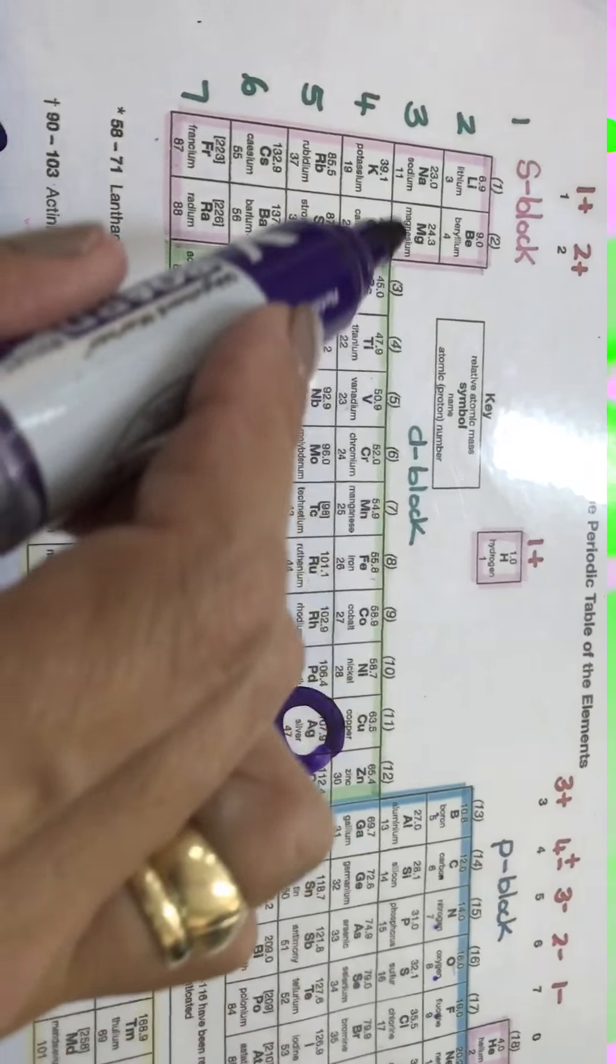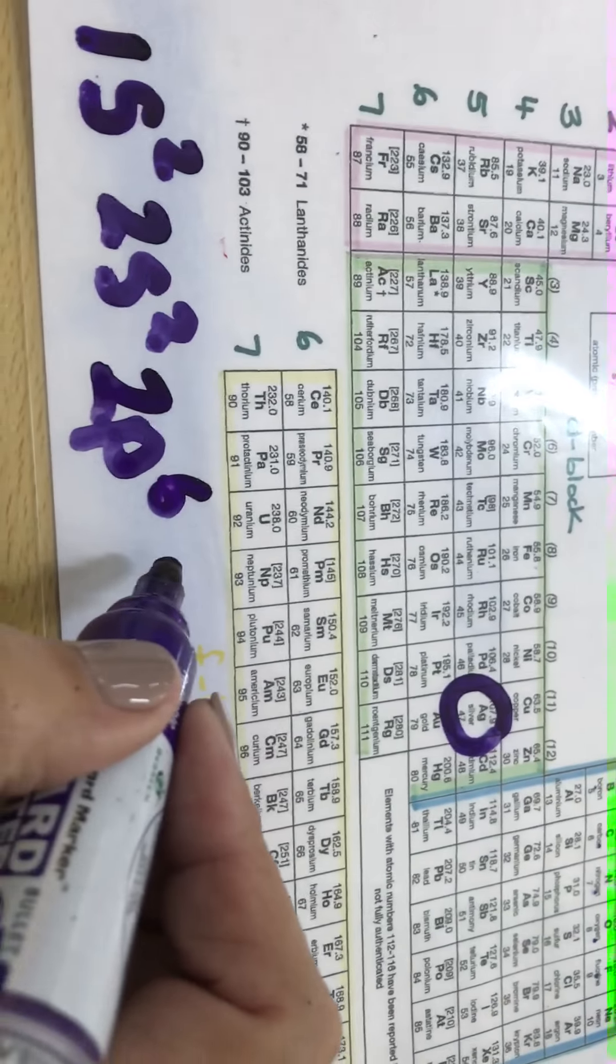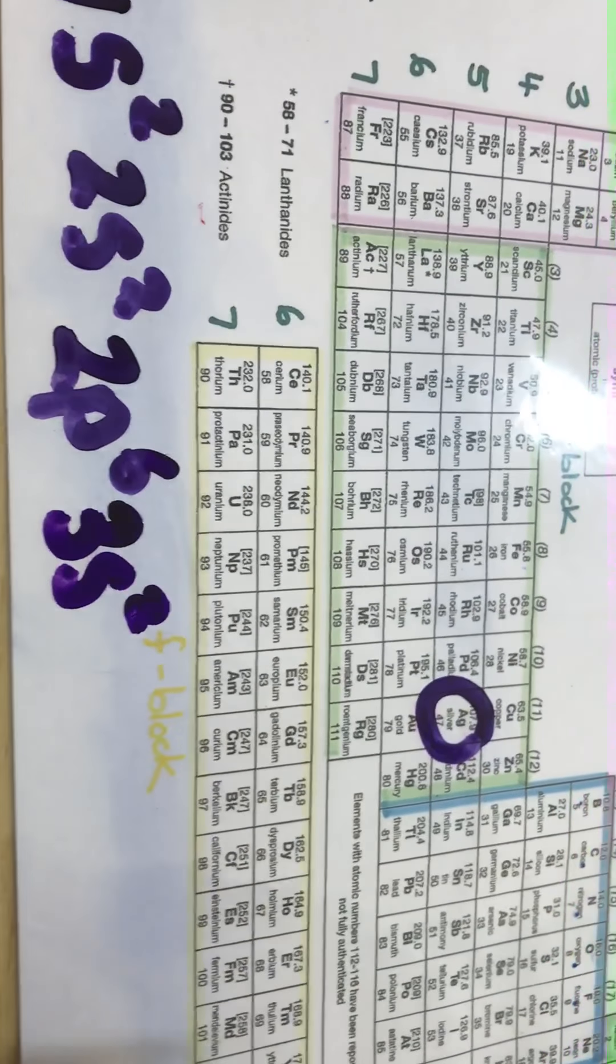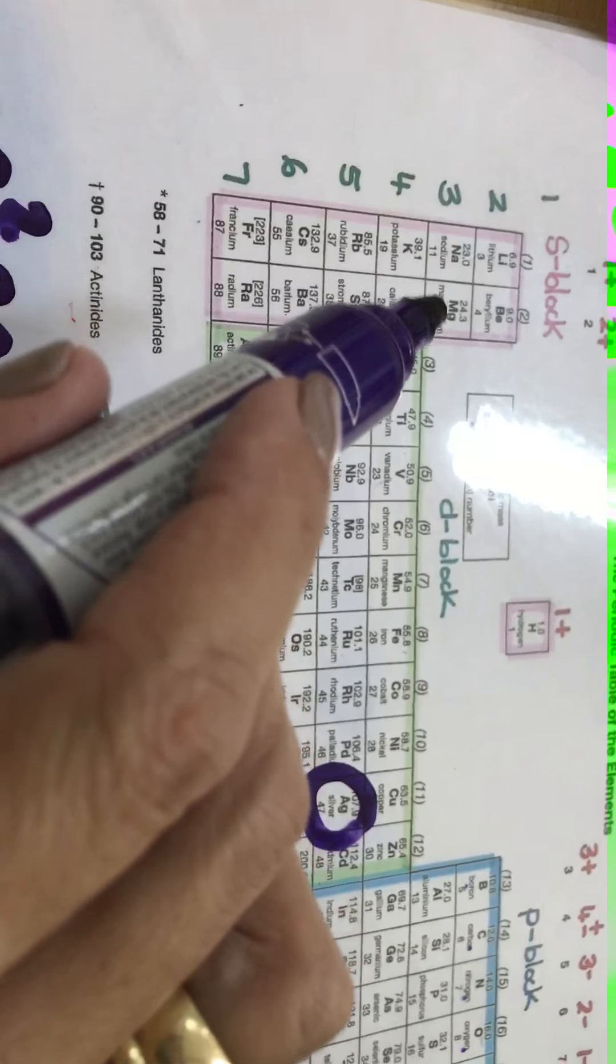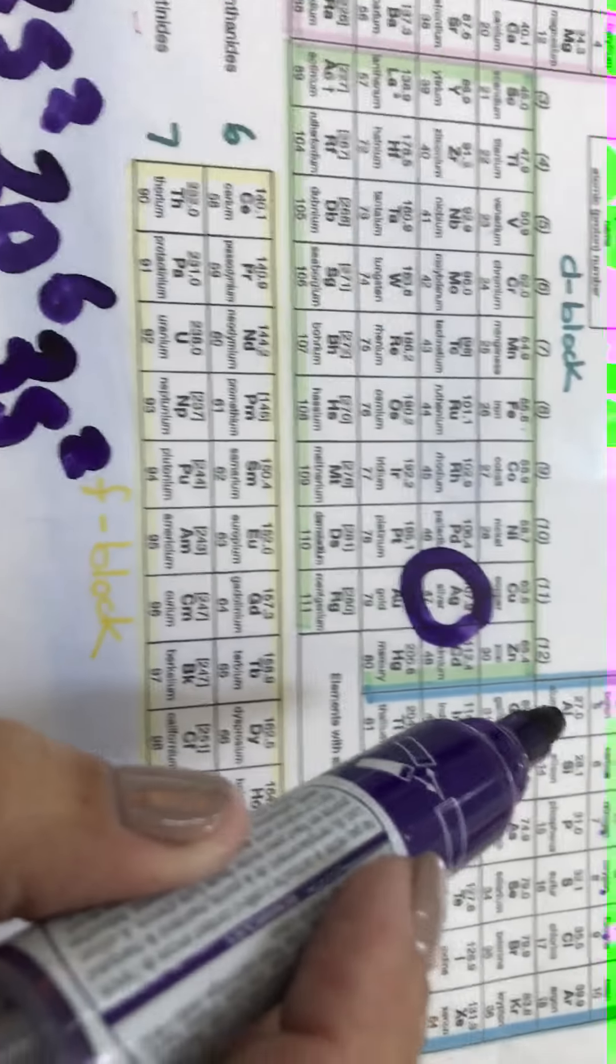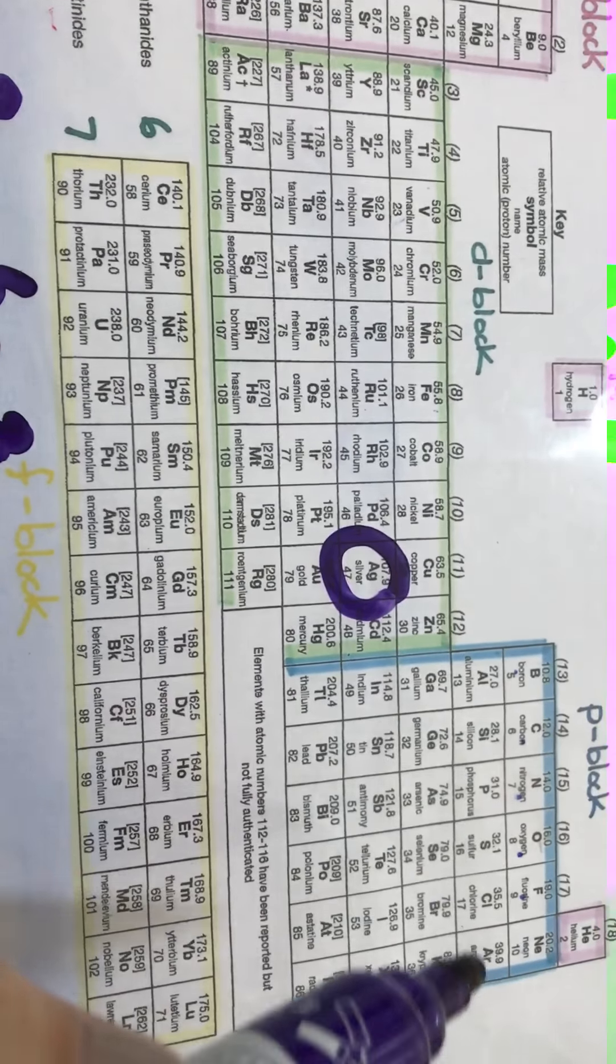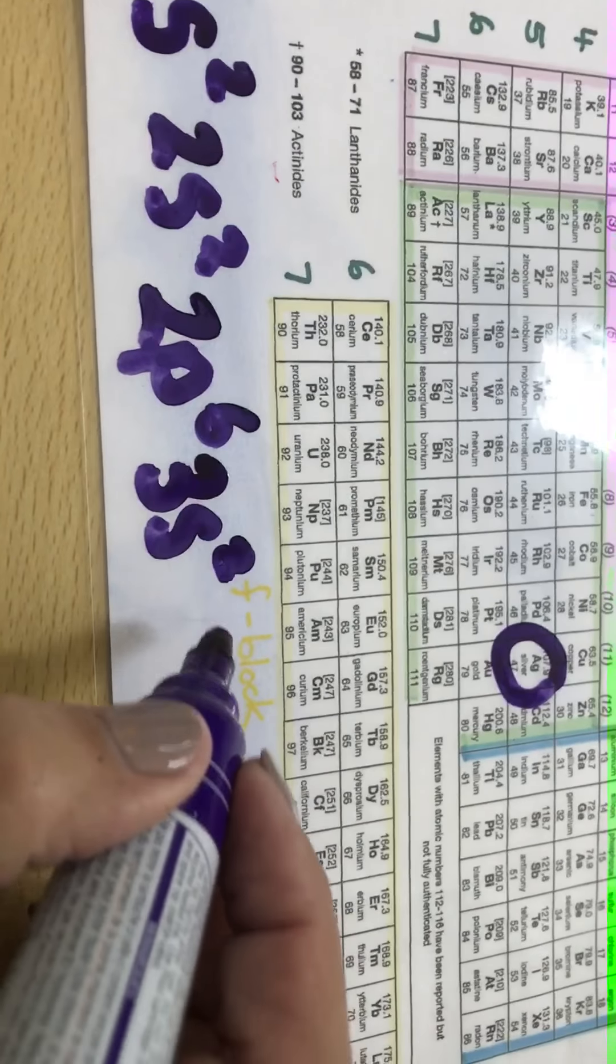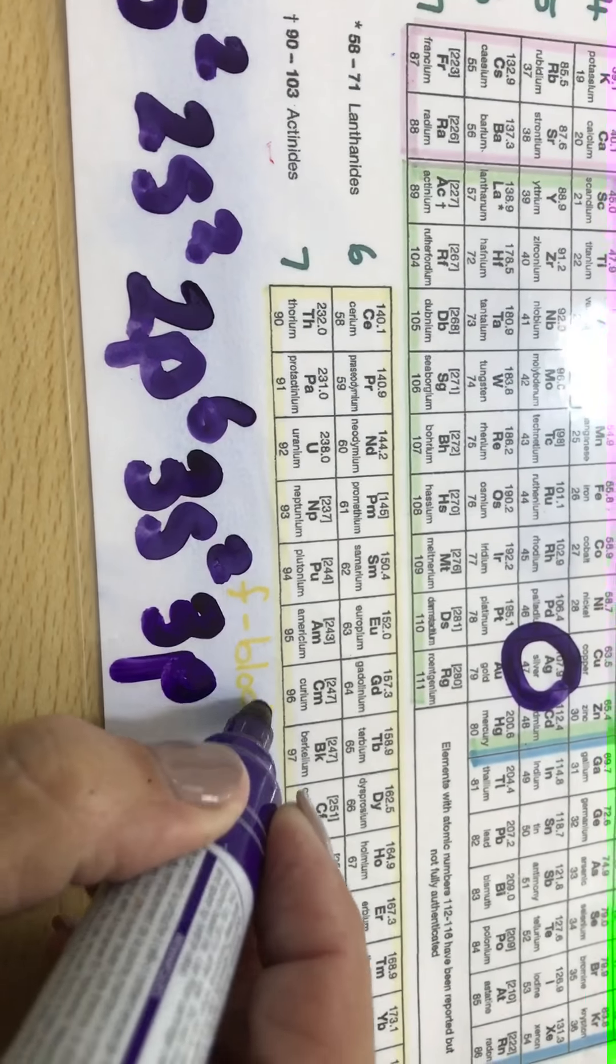Then from 2p I will go to 3s which can take two electrons. Then from the 3s you can see we go from 3s across and this is the 3p which can also take six. So 3p can take six.